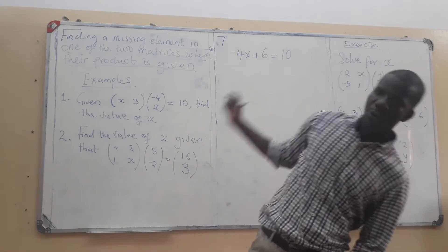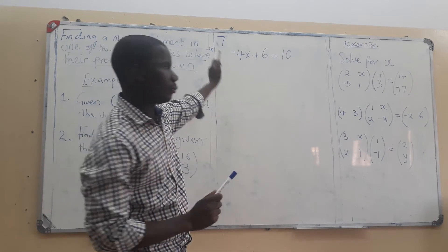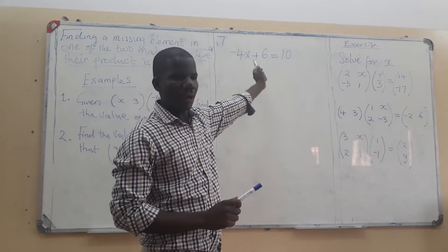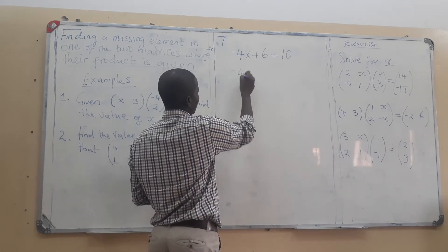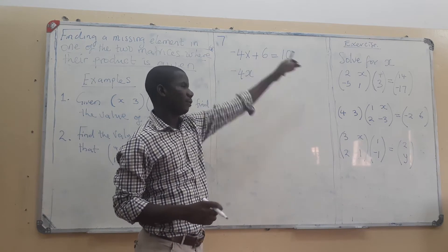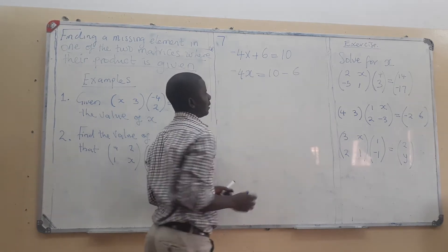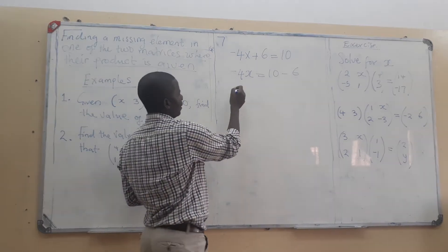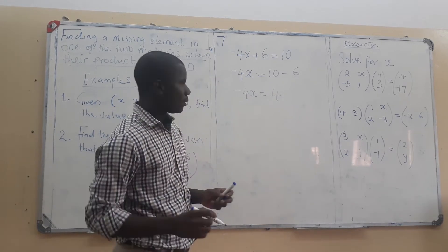This is equated to 10. Once we reach this point, we solve it as a linear equation — matrices helped us form the equation. We put like terms together, adding the additive inverse of positive 6 on both sides. That gives us negative 4x equals 10 minus 6, which is 4.